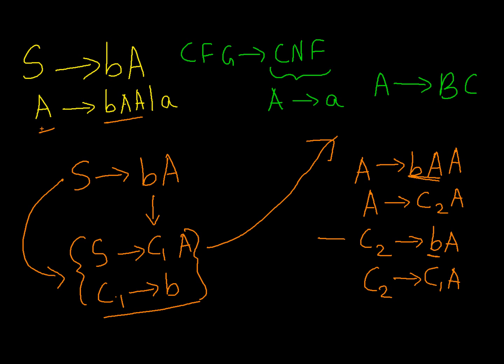Next we have symbol A produces terminal a. That is symbol A produces terminal a. This is already in Chomsky normal form, so I don't need to make any changes.